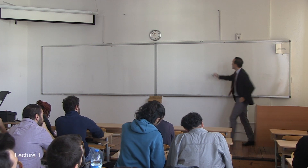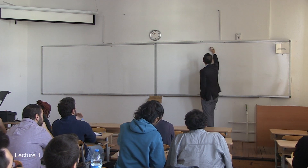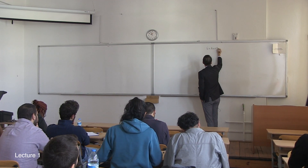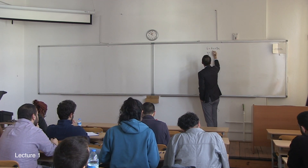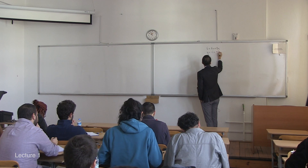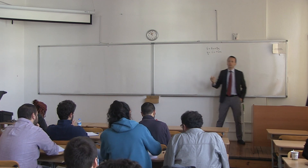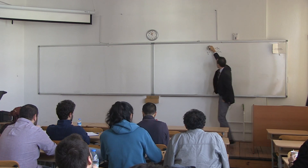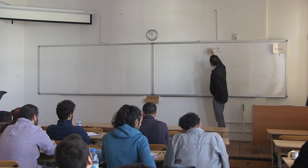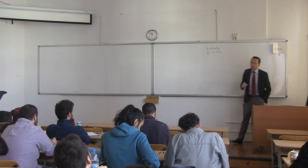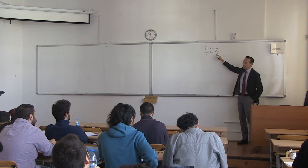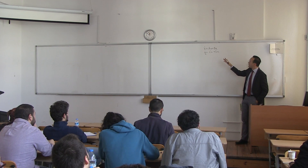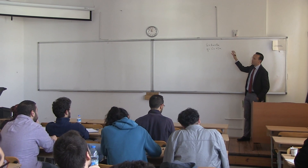Last week we stopped where I said the state space representation of a dynamical system looks like this, where x is the state, u is the control — this is a differential equation — and y is the output. This representation is defined by four matrices A, B, C, and D.